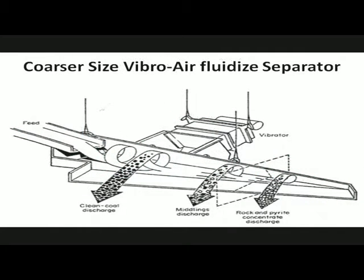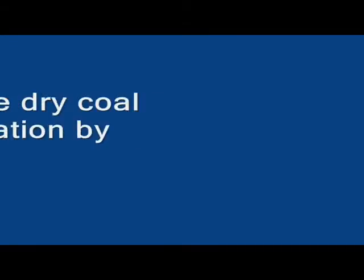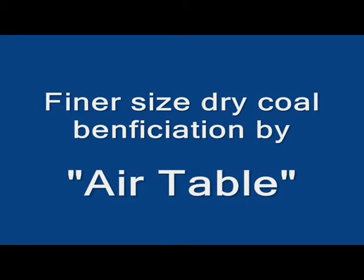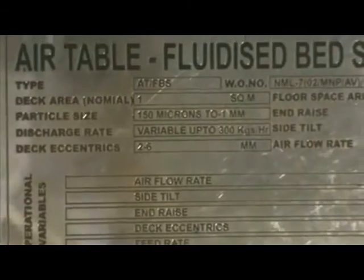Alternatively, NML is procuring a coarser-size vibro-air-fluidized-bed air separator. For dry beneficiation of coal in the fine size range, an air table is used. Coal feed size range is minus 1mm to 100 mesh. Air flow rate, side tilt, end tilt, feed rate, and vibration frequency are the five important parameters to be set on the air table.